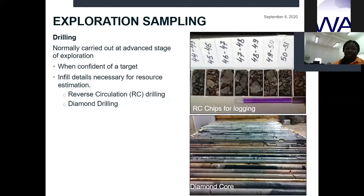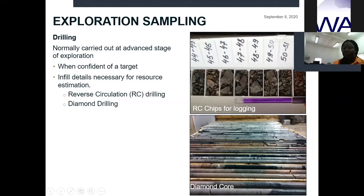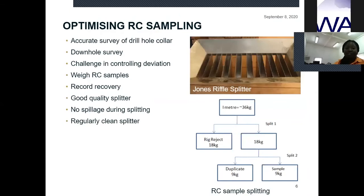Drilling is the main focus of this presentation. Drilling is normally carried out at an advanced stage of exploration when a geologist is confident of a target, and it may also infill details necessary for resource estimation. Typical types include RC drilling, which produces chips used for logging purposes, and diamond drilling, which produces core. Drilling is a very expensive venture, so there is a need to optimize the process and put procedures in place to get value for money.